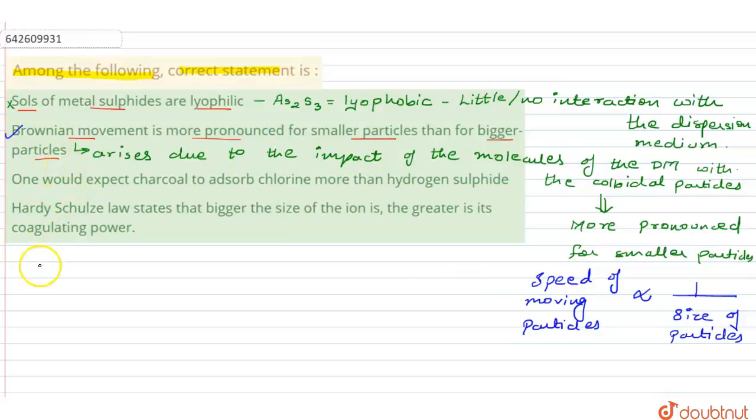Now let us analyze the other statements. The third statement says that one would expect charcoal to absorb chlorine more than hydrogen sulfide. This is absolutely incorrect. In fact charcoal would adsorb hydrogen sulfide to a larger extent as compared to chlorine.